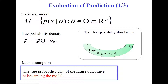We draw the schematic diagram here. The entire white space represents all possible probability distributions of the future outcome — a very large, abstract space. We focus on a restricted subset, denoted by M, specified with only a finite-dimensional parameter theta. In our main assumption, the true probability density lies within this model.